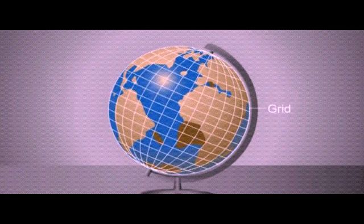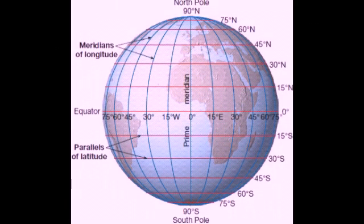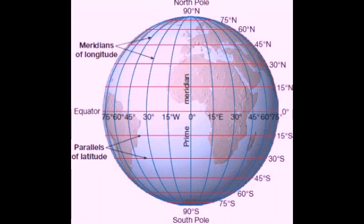This grid helps us to locate places, and these lines are given numbers which are numbered in degrees. In the northern hemisphere, the latitude lines are denoted with N, which means north, and in the southern hemisphere they are denoted with S, which means south. With reference to the prime meridian, the lines are denoted with W for west and E for east.